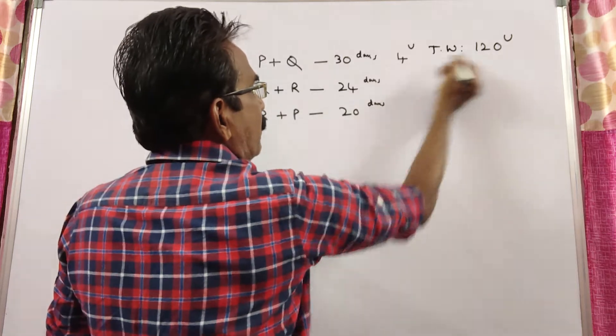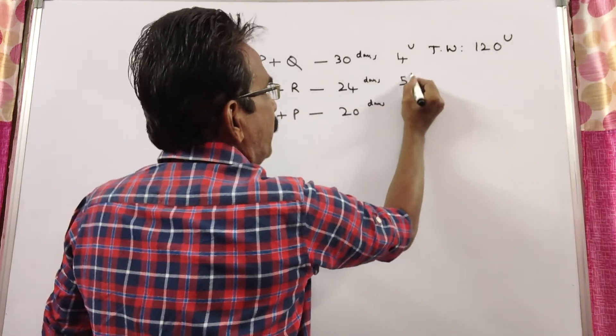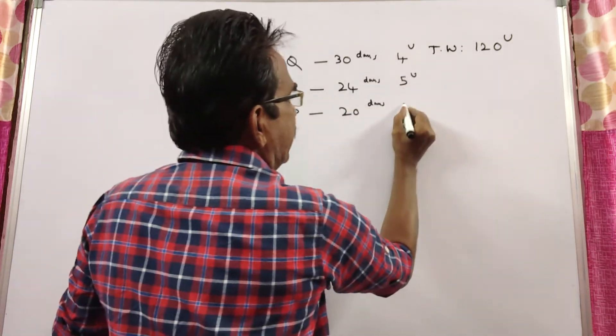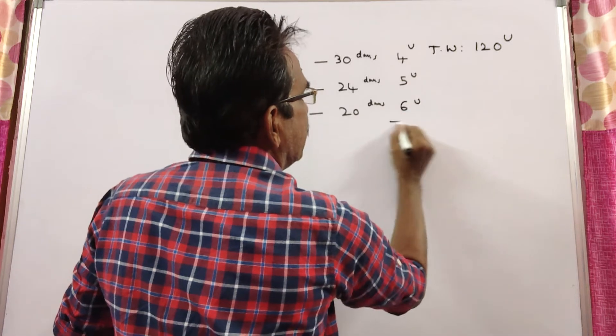In the same way, Q plus R, 24, 5 units and R plus P, 6 units. That means Q plus R is 5 units per day, R plus P is 6 units per day.